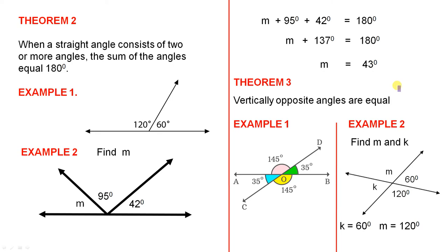And the third theorem, which is very straightforward, vertically opposite angles are equal. For the first example, this is a specific example. So we have this line intersecting that line at the point O. So 145 is vertically opposite to that angle, so that must be 145. 35 degrees is vertically opposite to this angle, so that must be 35 degrees. So this is a specific example.